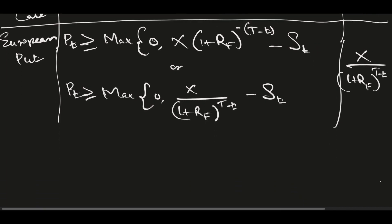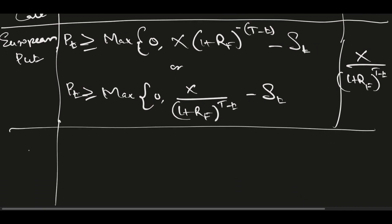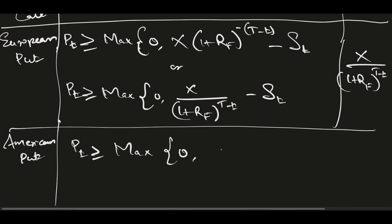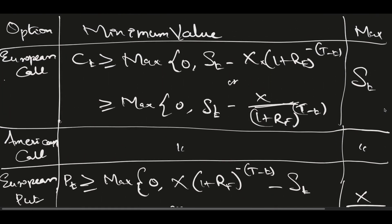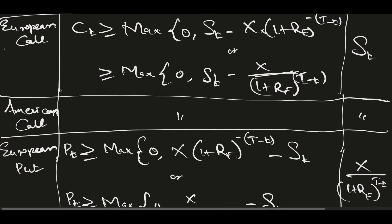For American put option, the price is greater than or equal to maximum of 0 or strike minus spot directly — no discounting here. The maximum value will be the strike price. I need to explain why it works this way, and I'll show it with an example.